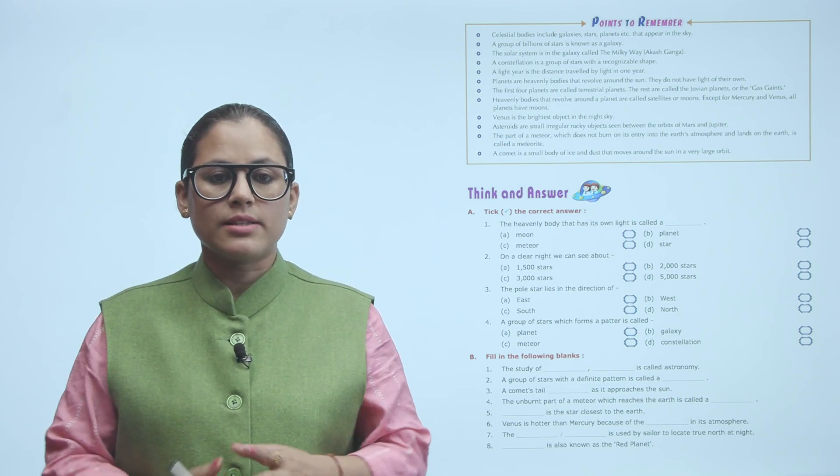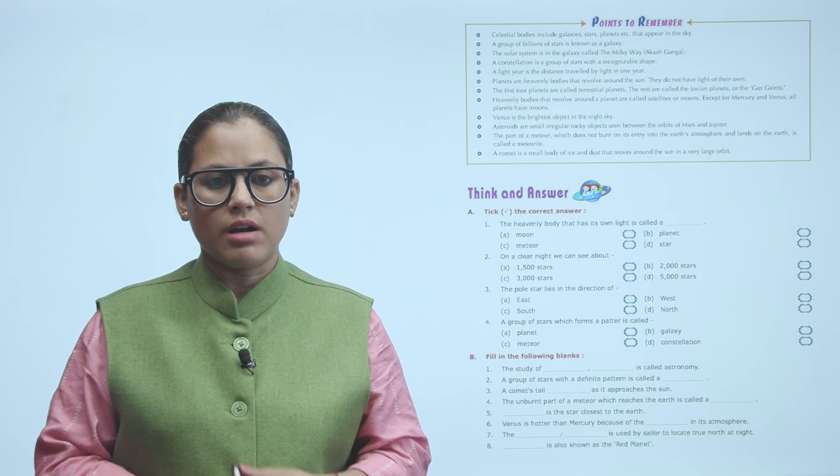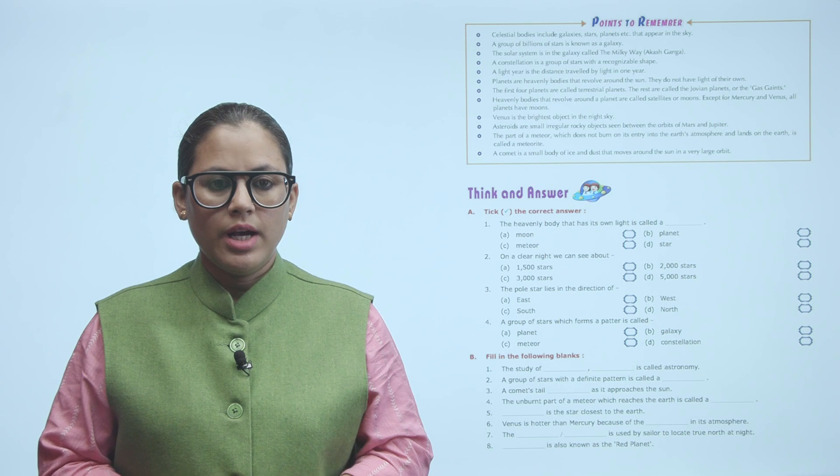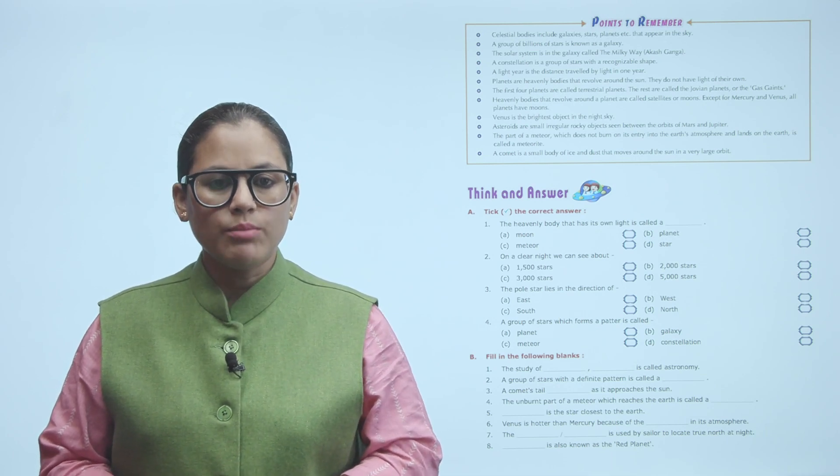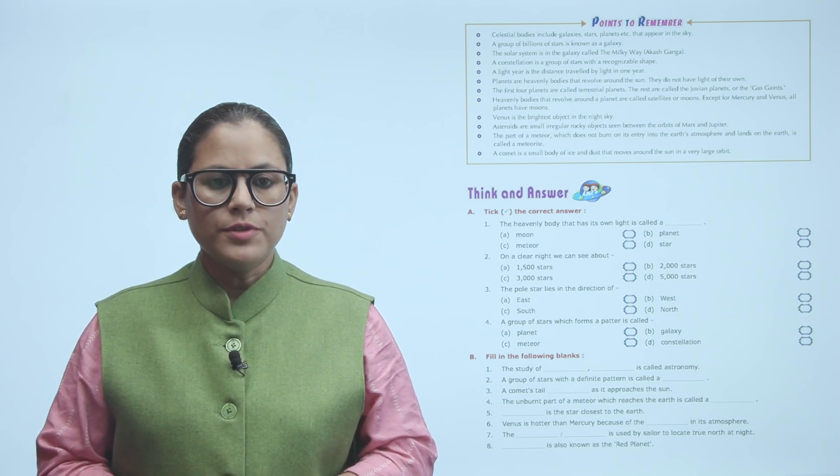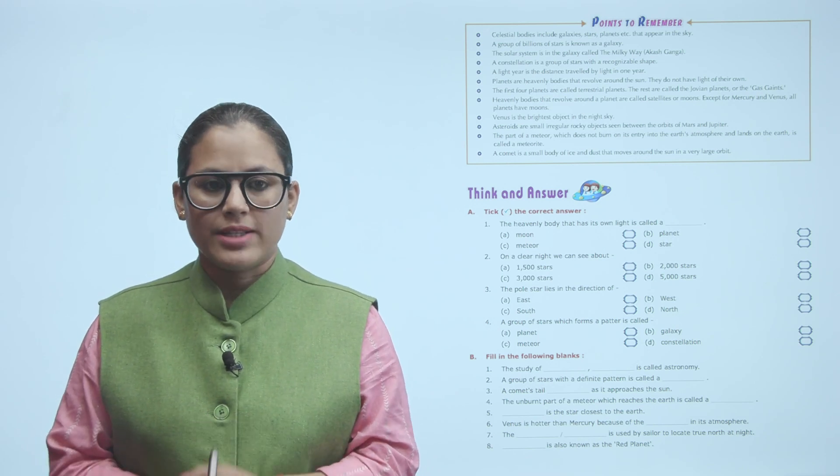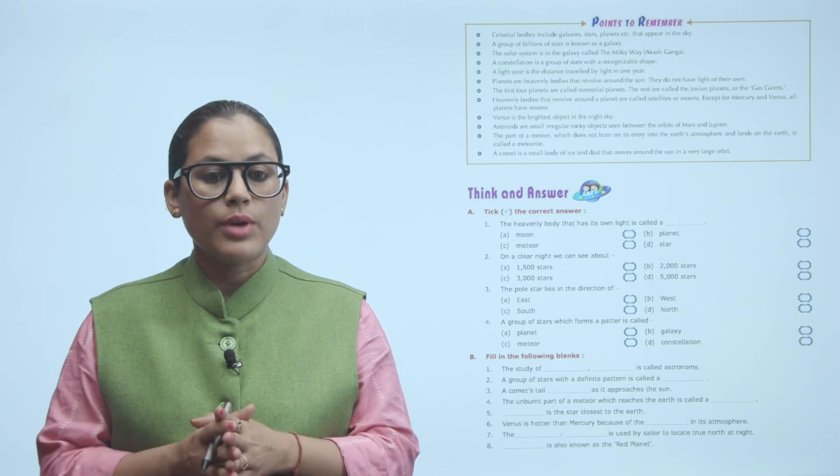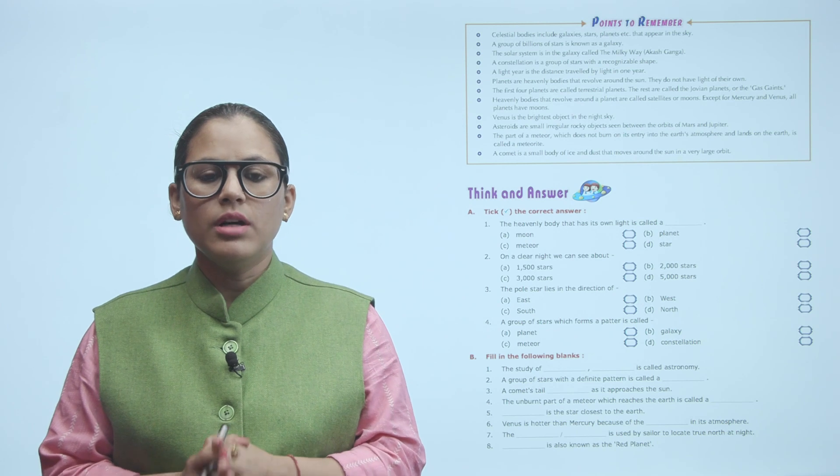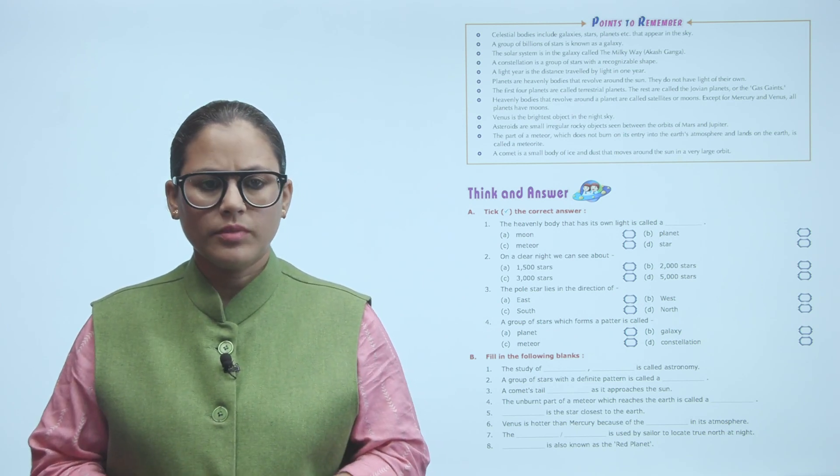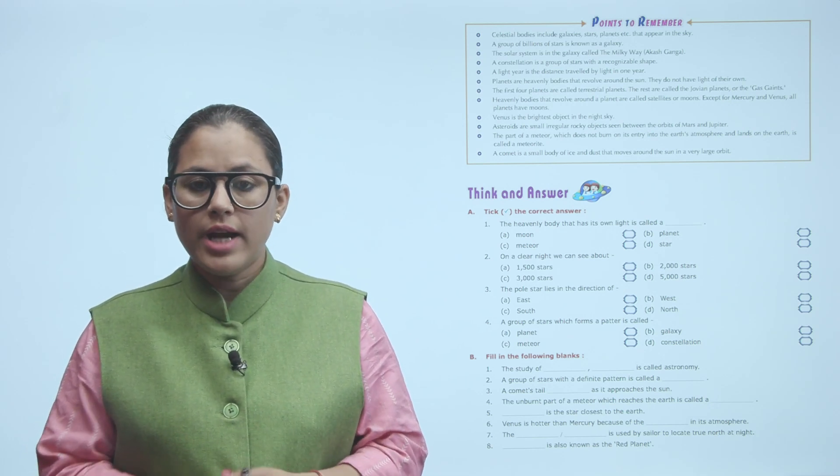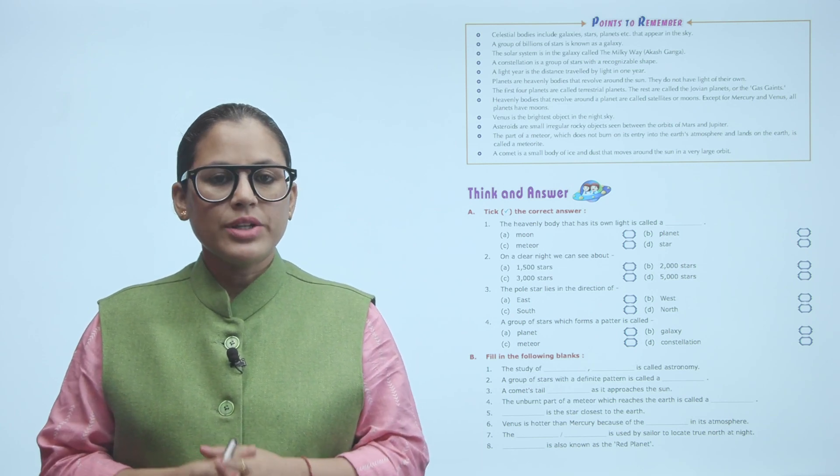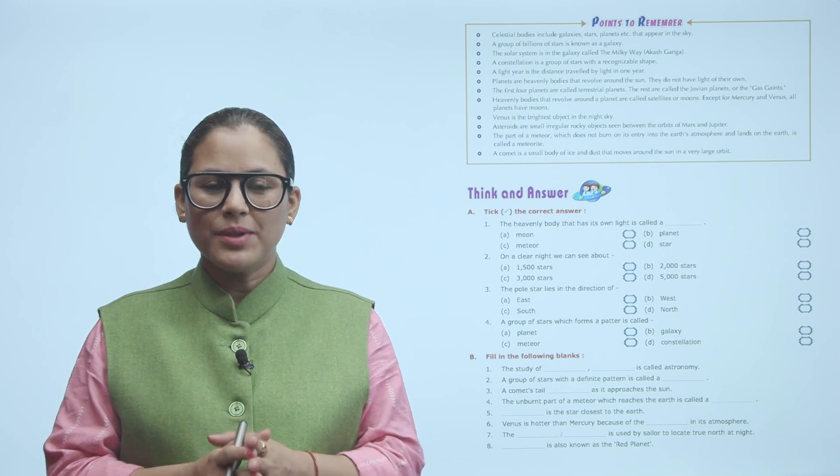Summary: The solar system is in the galaxy called the Milky Way or Akash Ganga. A constellation is a group of stars with a recognizable shape. A light year is the distance traveled by light in one year. Planets are heavenly bodies that revolve around the sun. They do not have light of their own. The first four planets are called terrestrial planets. The rest are called the Jovian planets or the gas giants. Heavenly bodies that revolve around planets are called satellites or moons. Except for Mercury and Venus, all planets have moons. Venus is the brightest object in the night sky. Asteroids are small irregular rocky objects seen between the orbits of Mars and Jupiter. The part of a meteor which does not burn on its entry into the earth's atmosphere and lands on earth is called a meteorite. A comet is a small body of ice and dust that moves around the sun in a very large orbit. Children, I hope you found this chapter interesting.